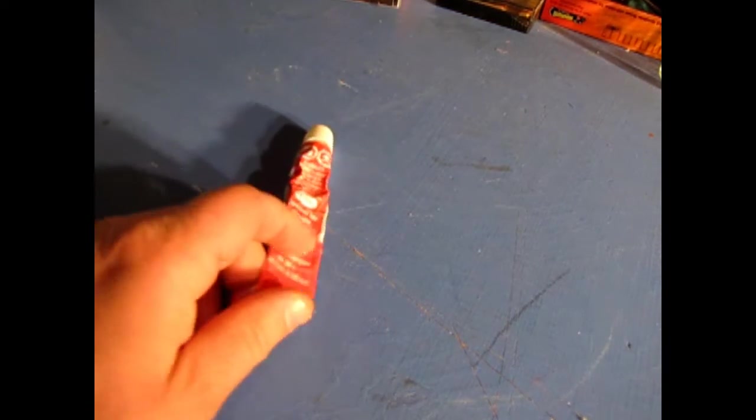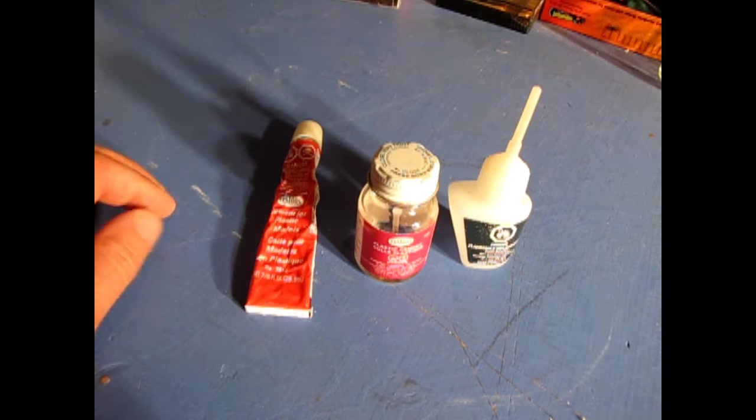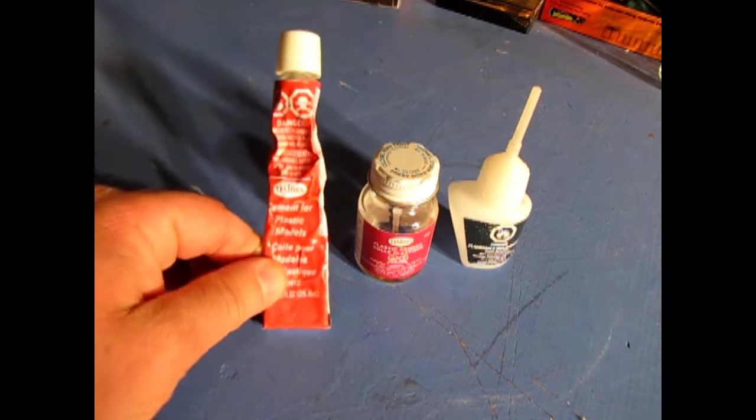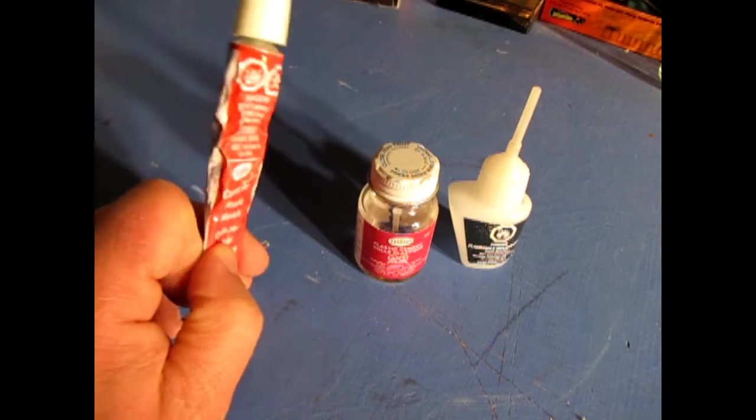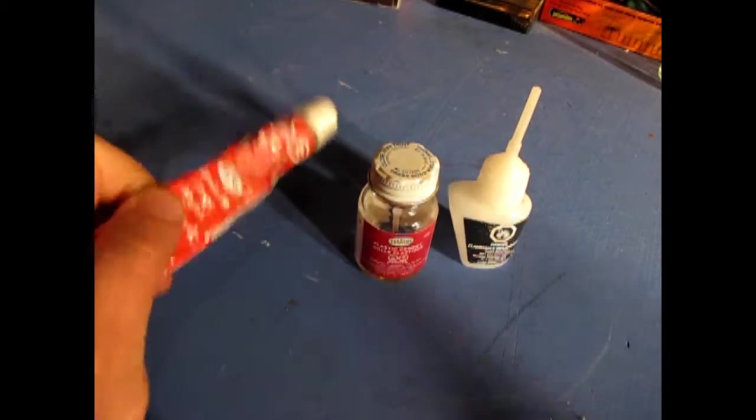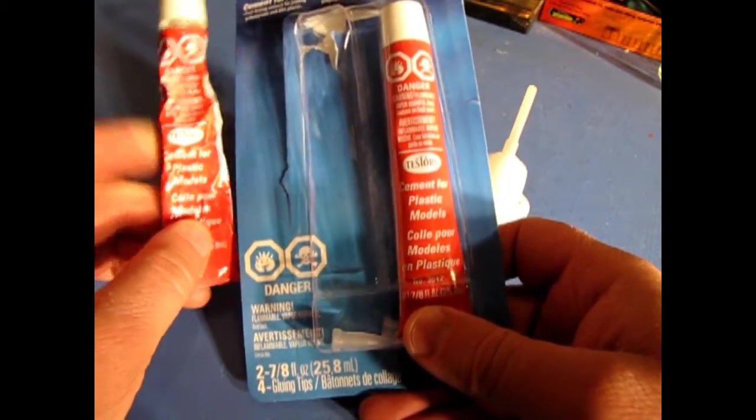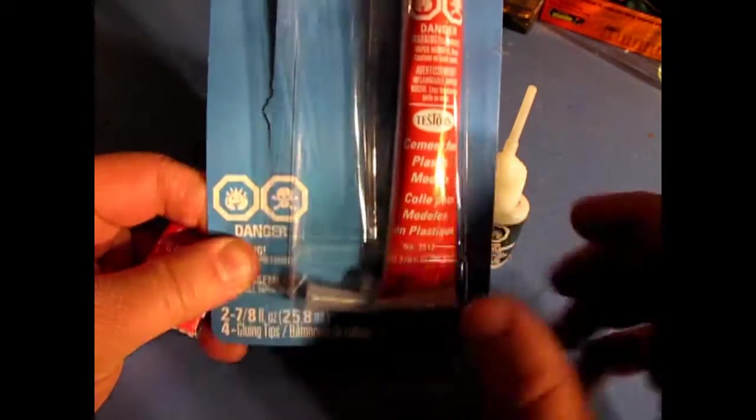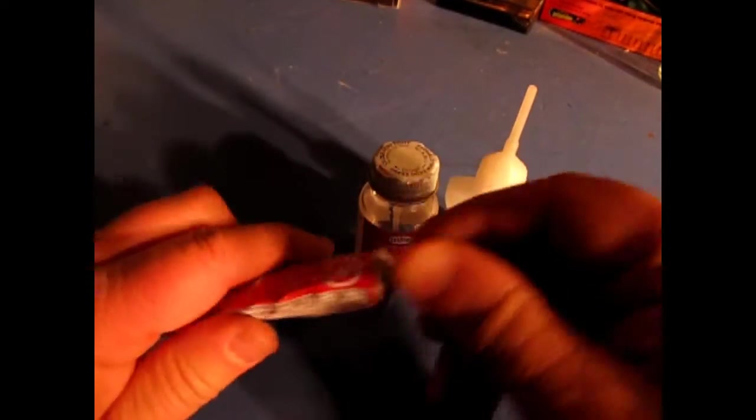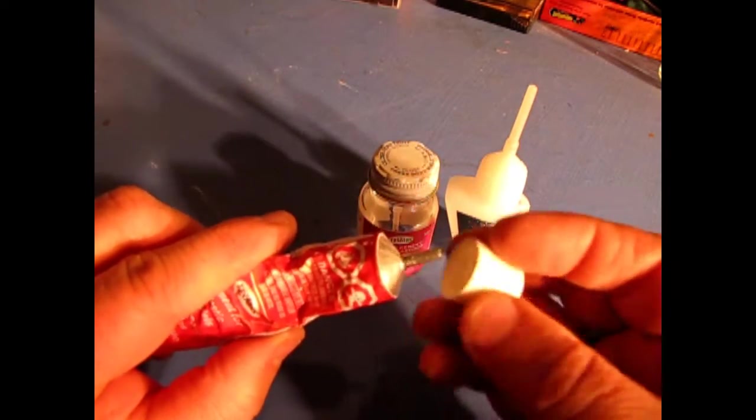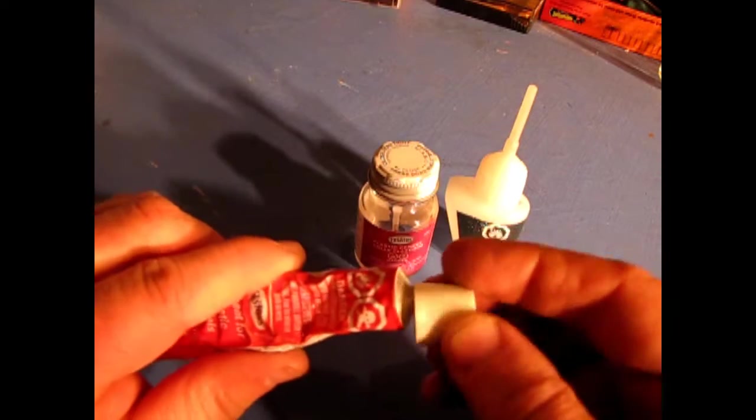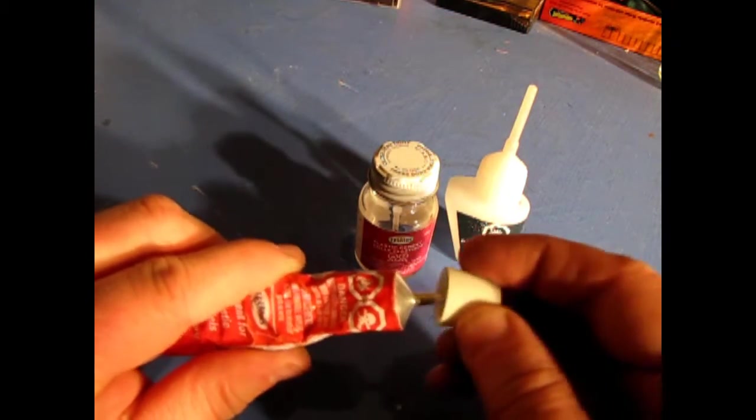So the next thing you're going to need is some hobby glue. What modeling session is not complete without some hobby glue? So this is the old standby tried and true testers tube glue. As you can tell, I've used this one quite a bit. A new one would be nice and fresh and in a package like that. And this one comes with some little tip ends. So you would take the cap off and then you can put one of those ends on there and it gives you like a better flow, more control.